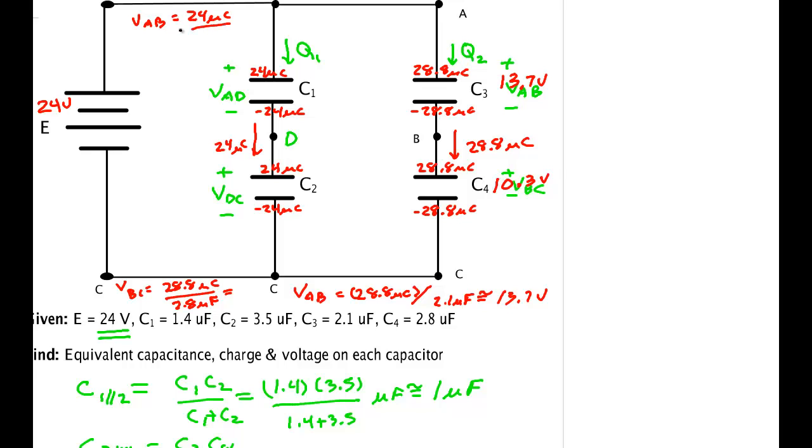Likewise, V_AD is 24 microcoulombs over 1.4 microfarads, which equals 17.1 volts. The last one, V_DC, is 24 microcoulombs over 3.5 microfarads, which equals 6.9 volts. 6.9 plus 17.1 gives us 24 volts.